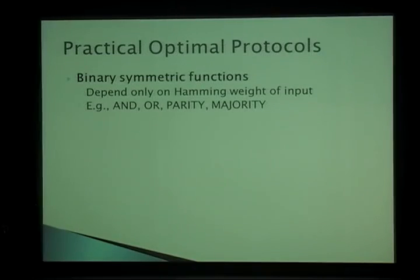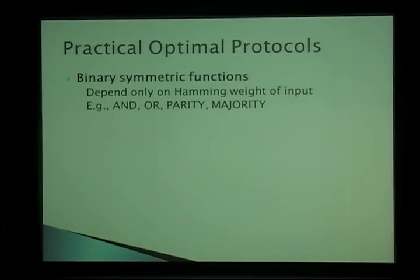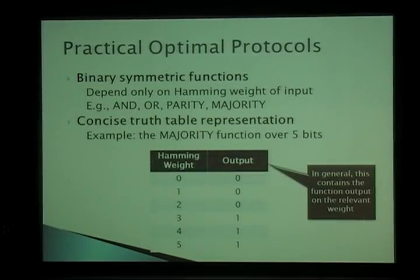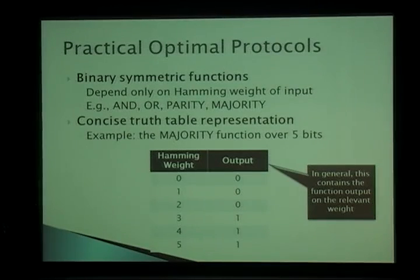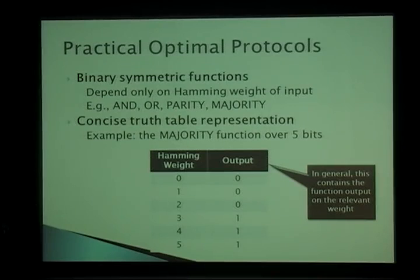We'll focus on binary symmetric functions: functions with binary inputs 0/1 whose output depends only on the Hamming weight. Examples include AND, OR, parity, and majority — which corresponds to voting for tenure, where all we care about is how many people voted yes versus no. These functions have a concise truth table of size N+1 rather than 2^N: for each possible Hamming weight (0 through N), you write the output, giving N+1 entries.